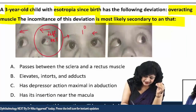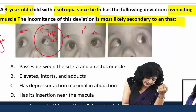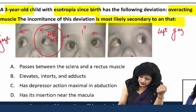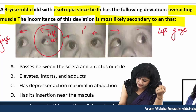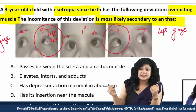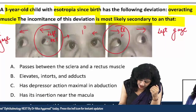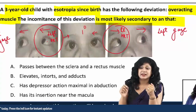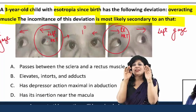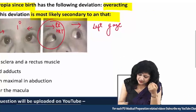The muscle showing over-action is doing elevation in the adducted position, because this eye is adducting when looking into the right gaze. Similarly, in the left gaze, the right eye is showing hypertropia. So both eyes are showing elevation when adducted.